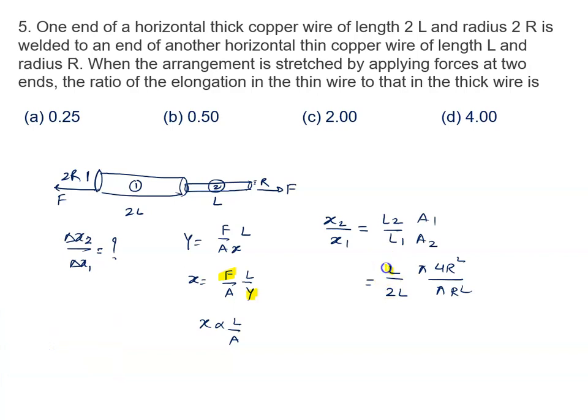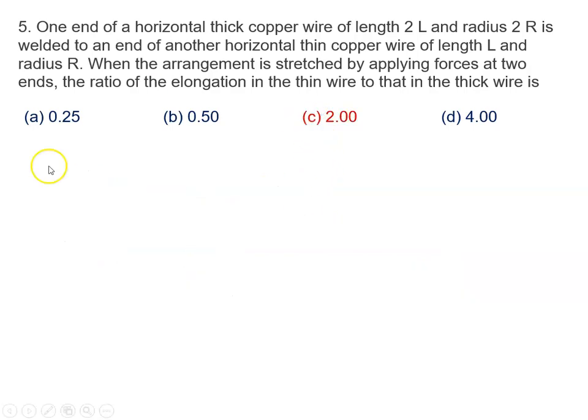So we are observing, L will cancel, π will also cancel, R square will also cancel, and we will say 2, two out of 4. So finally it is only 2. So right answer of this problem is option C, that is 2.